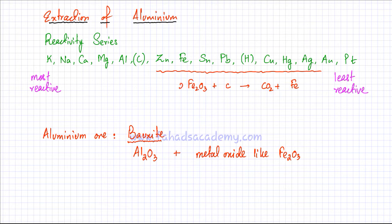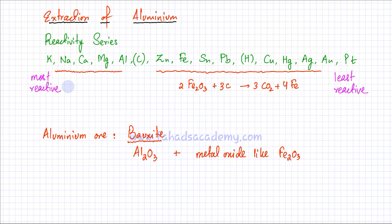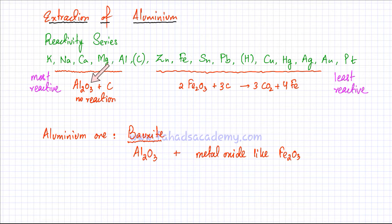The balanced equation for carbon reduction of iron oxide is: 2Fe2O3 + 3C → 4Fe + 3CO2. However, you can't reduce metal oxides that are higher in the reactivity series with carbon. Aluminium oxide is not going to react with carbon because carbon is less reactive, so no displacement reaction would occur and carbon cannot take the oxygen away from aluminium.